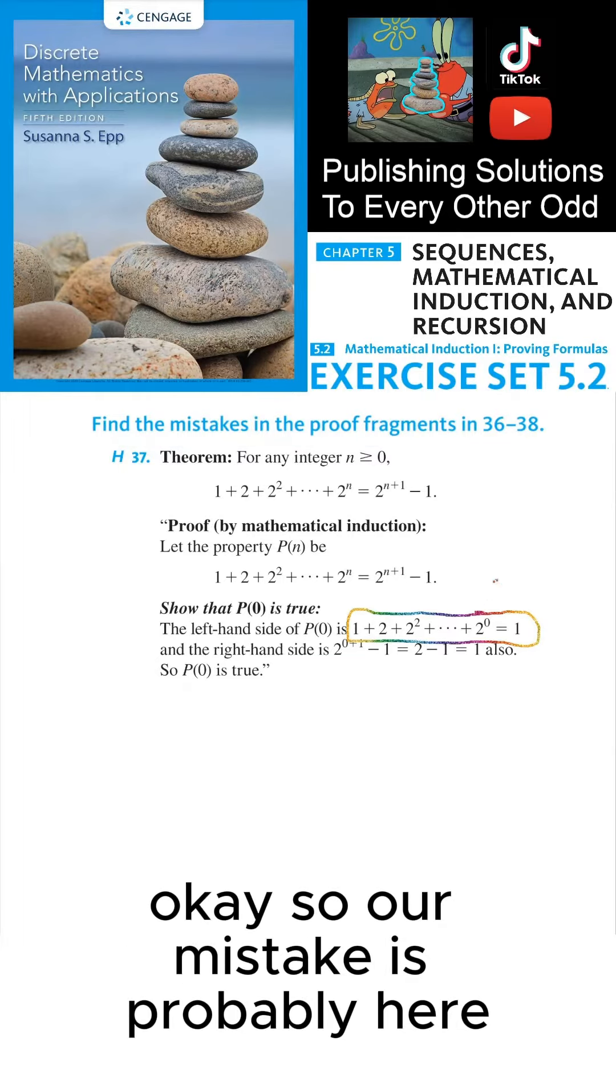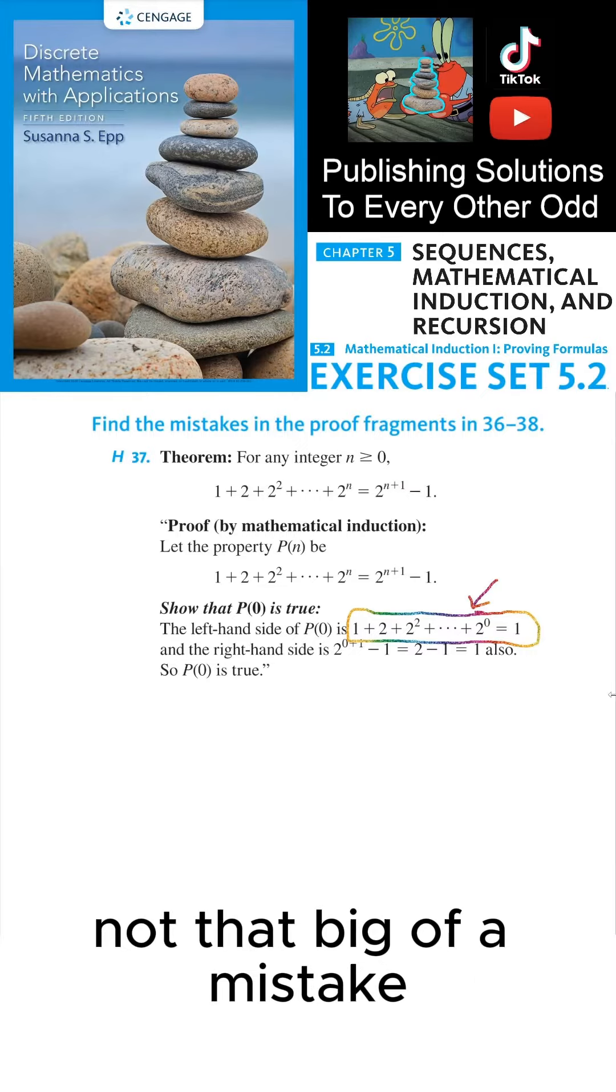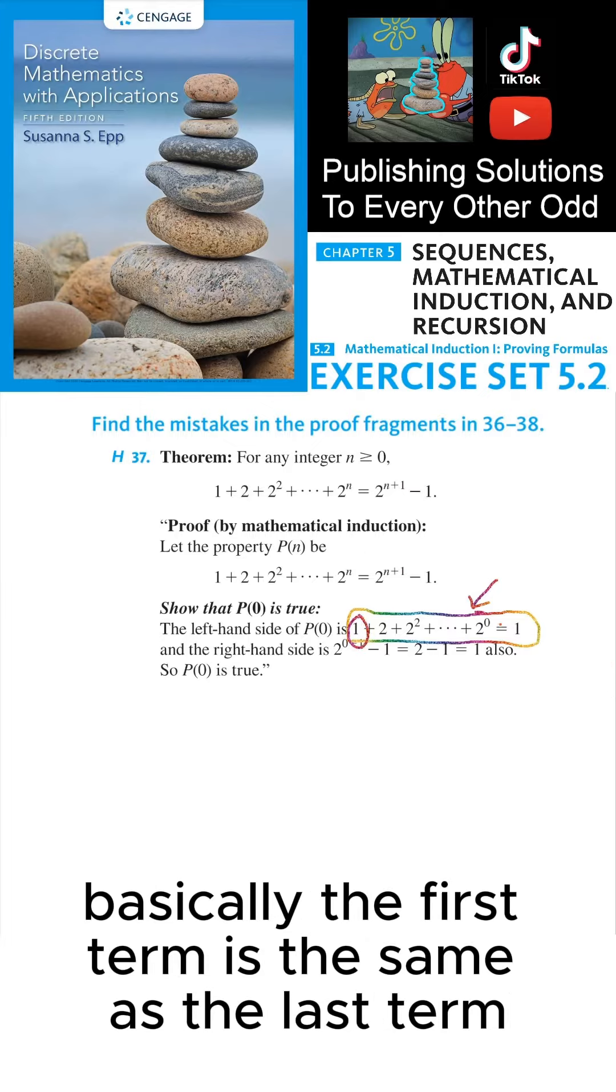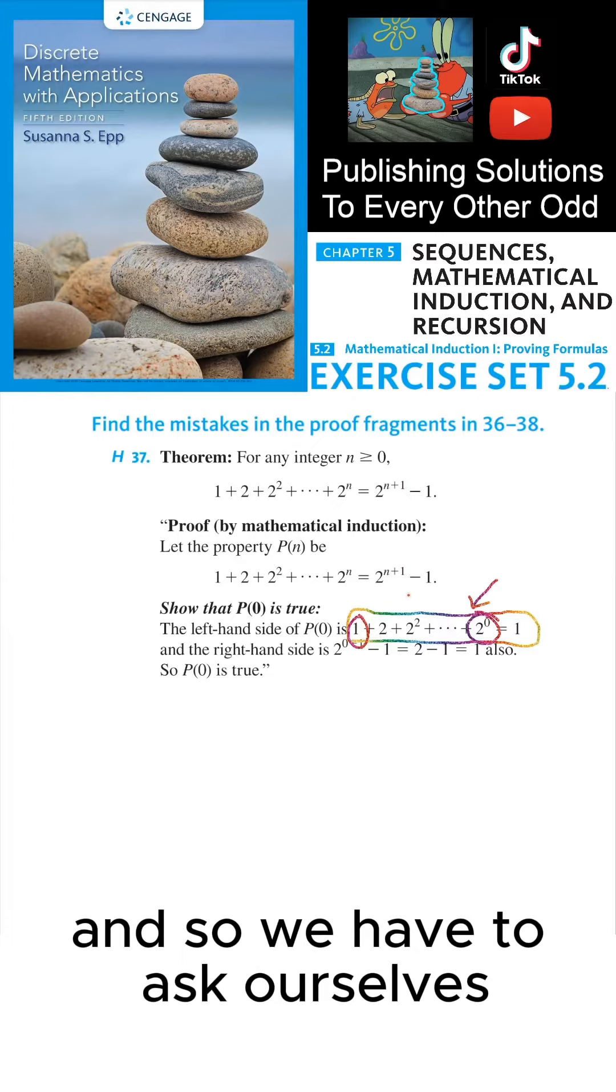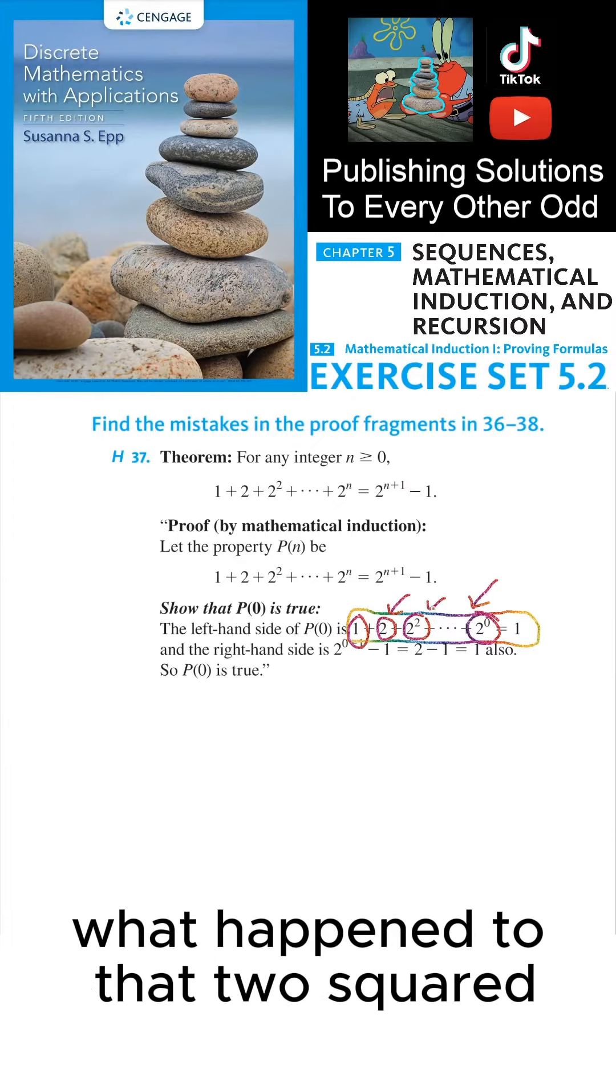Our mistake is probably here, although I think this mistake is not that big of a mistake. The mistake is subtle. Basically, the first term is the same as the last term. And so we have to ask ourselves, what happened to everything in between? What happened to that two squared?